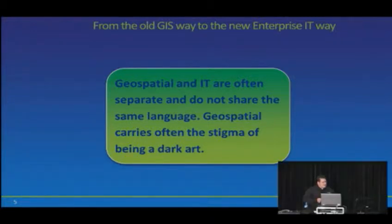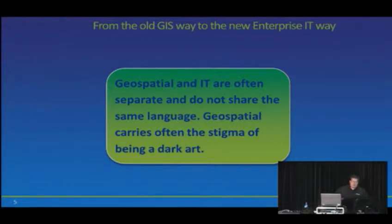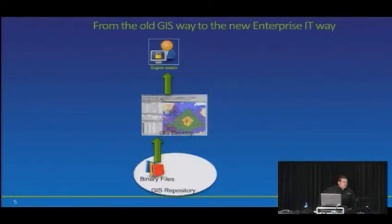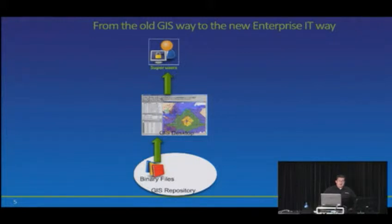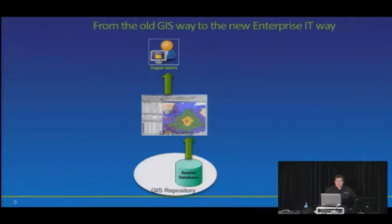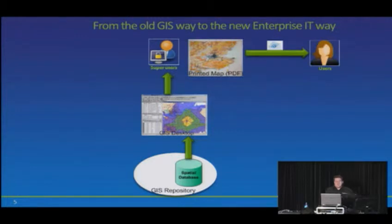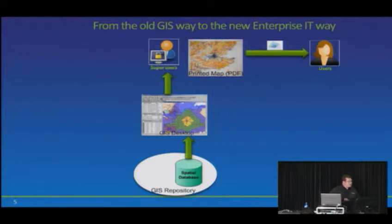A little bit of history — and unfortunately it's history but it's also not history. This is one of the reasons geospatial and location intelligence has taken so long to become mainstream. Most organizations still use it the old way: super users on desktop tools, accessing data from binary files. Probably 90% of larger organizations have a room of people who do this kind of stuff, and they basically print maps or create PDFs and hand them to their users. That's still the typical way location intelligence is used in many organizations.